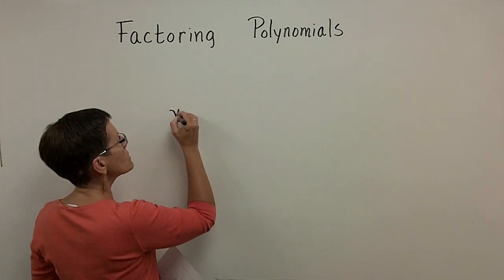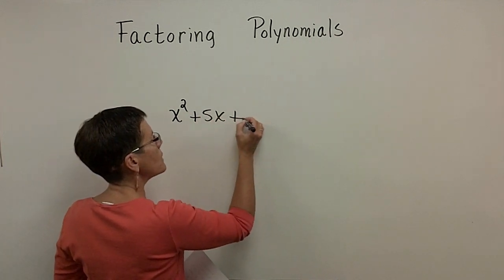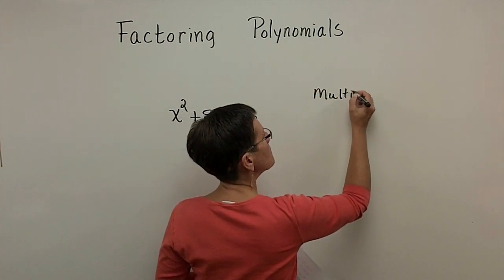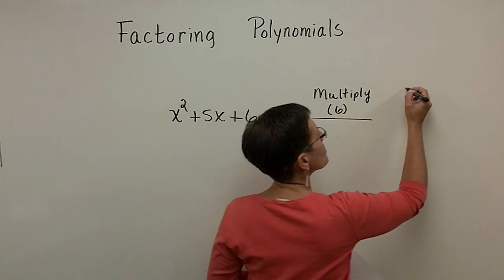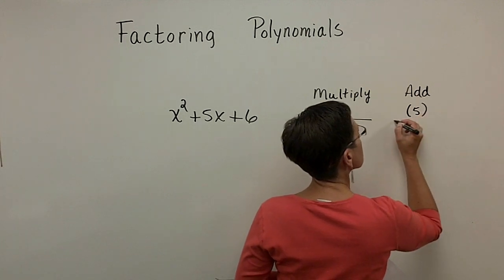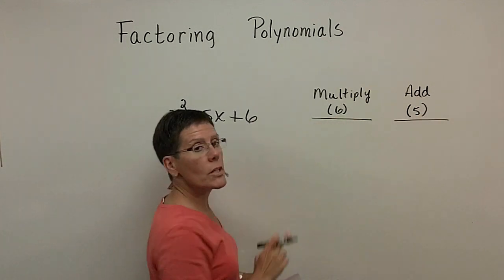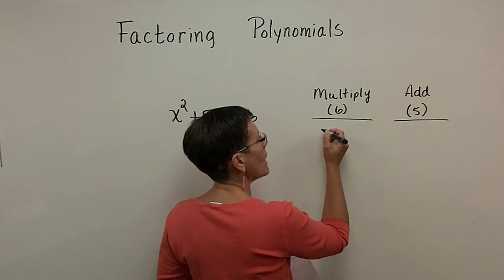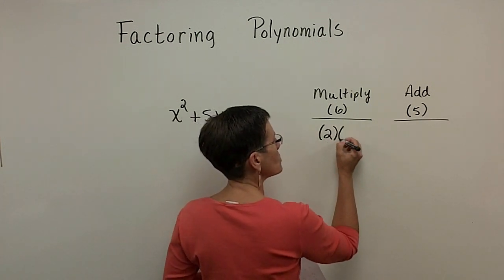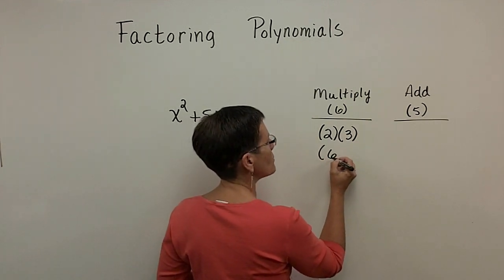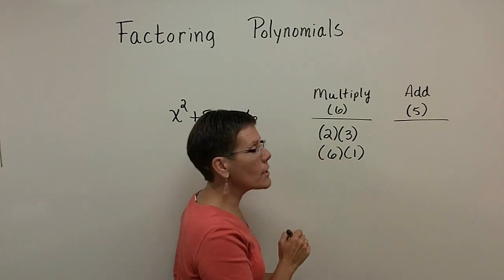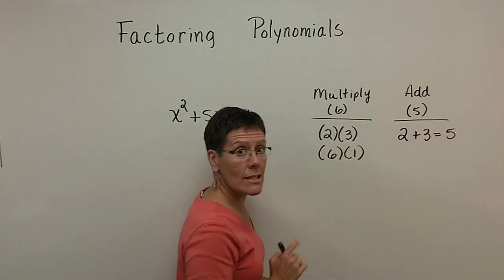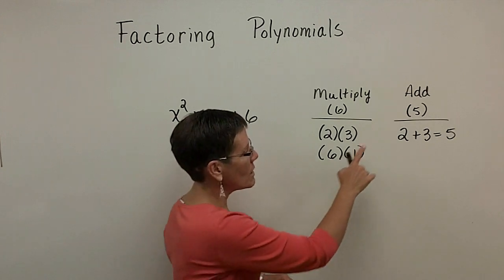If we have x squared plus 5x plus 6, I'm looking for two numbers that multiply to be 6 and add to be 5. If the number is large, just list factor pairs in a table. Two numbers that multiply to be 6 are 2 times 3, but don't forget 6 times 1. Of those two pairs, I'm looking for the one that adds to be 5 — it's 2 plus 3, not 6 plus 1, which adds to be 7.